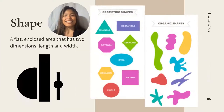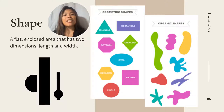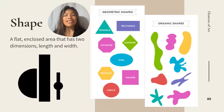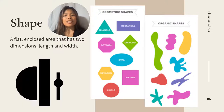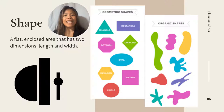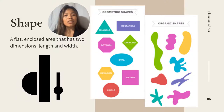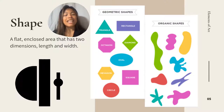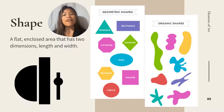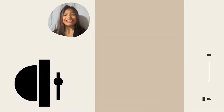Second, Shape. A flat enclosed area that has two dimensions, length and width. Artists use both geometric and organic shapes. Geometric shapes are rigid, severe, and confining, while organic shapes are fluid, free, and natural.